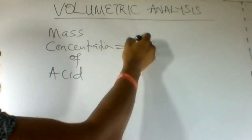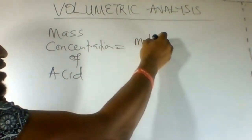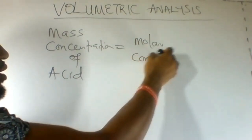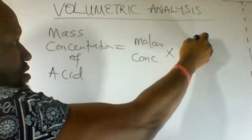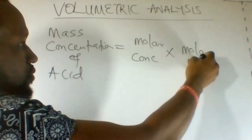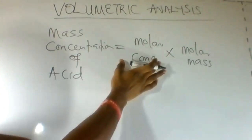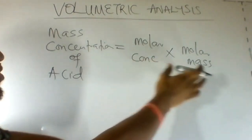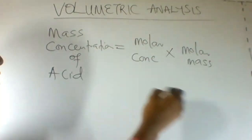We can get that by multiplying the molar concentration with the molar mass of the acid. We can do this by multiplying molar concentration of the acid by the molar mass.